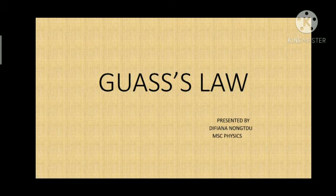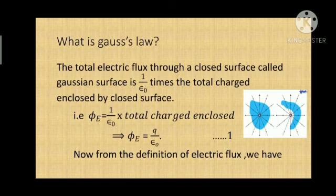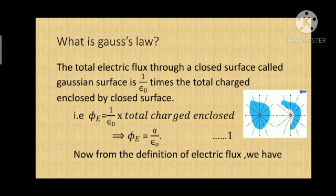Now, suppose if we take a closed surface in space where there is an electric field, there will be a flux linked to it. The flux linked to it can either be zero or non-zero. From the definition, the total electric flux, denoted by phi_e, through a closed surface — called the Gaussian surface — is equal to 1 over epsilon naught times the total charge enclosed. That is, phi_e = q / epsilon_naught.